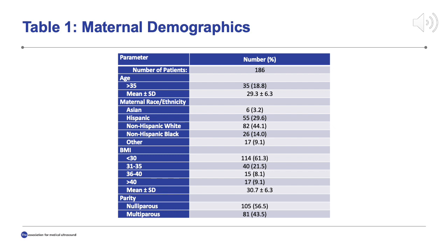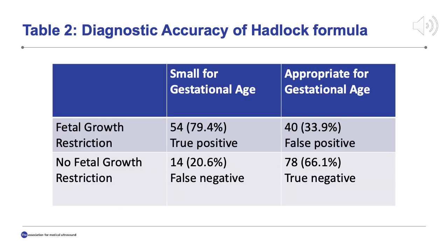186 patients were included in the study. The mean maternal age at time of delivery was 29.3 years. Race and ethnicity data was not documented for 18 patients; however, for the remaining patients, non-Hispanic white women comprised the majority at 44.1% of patients, Hispanic women comprised 29.6%, non-Hispanic black 14%, and Asian women 6%. 56.5% of patients were nulliparous. The average maternal BMI at the time of delivery was 30.3 kg per m squared. When ultrasound data was analyzed and compared to neonatal birth weights, 79.4% of patients were found to accurately have a small for gestational age infant that was detected prenatally as being fetal growth restricted.